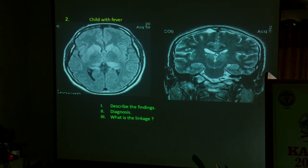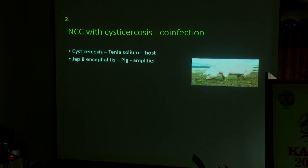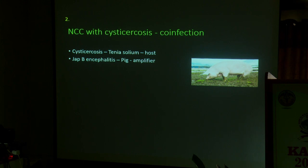The connecting point between Japanese encephalitis and neurocysticercosis is the pig or swine. Taenia solium uses the pig as an intermediate host, while the pig acts as an amplifier in Japanese encephalitis. Whenever there are more piggeries, both organisms will circulate in the same community, so the patient will have both Japanese encephalitis and neurocysticercosis as a co-infection.